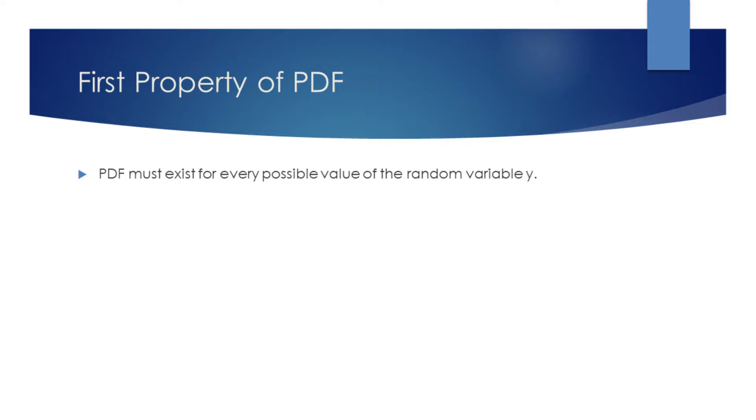The first property is that the domain of PDF must consist of every possible value of its random variable. In case of our example, this means that PDF must exist for every possible value within the interval of real numbers from 2 to 3.